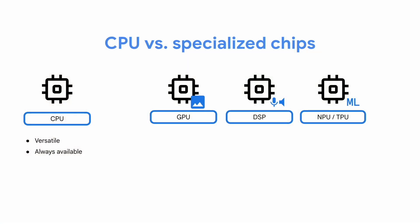We can group specialized hardware into three categories: GPUs (graphical processing units), DSPs (digital signal processors), and NPUs (neural processing units). GPUs are often used for graphical rendering, but they offer high throughput and massive parallelization, which is very handy for machine learning processes, especially for real-time experiences. They are also capable of handling floating-point calculations, so you can reach good performance without having to quantize your model. The GPU is often the most popular hardware for ML acceleration for Android developers.